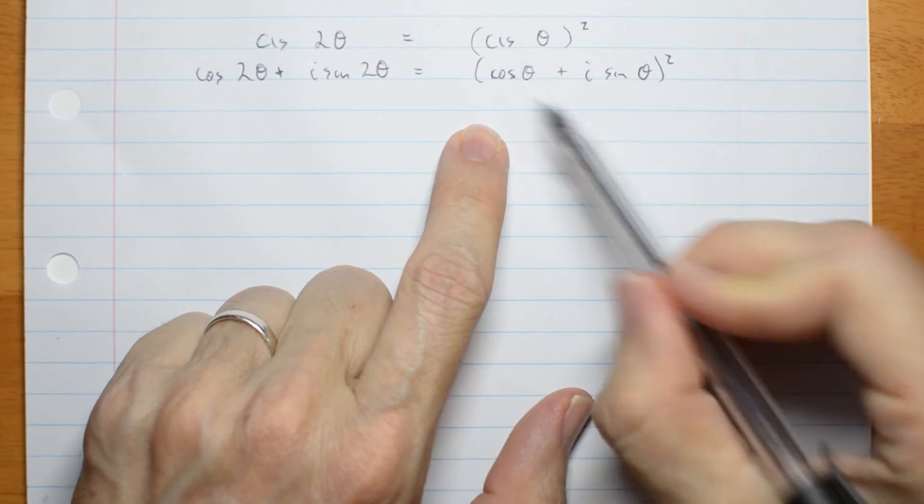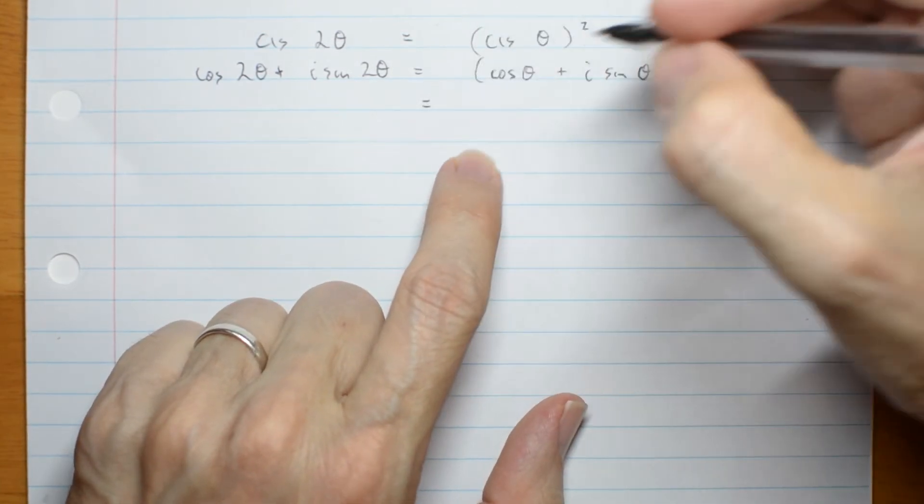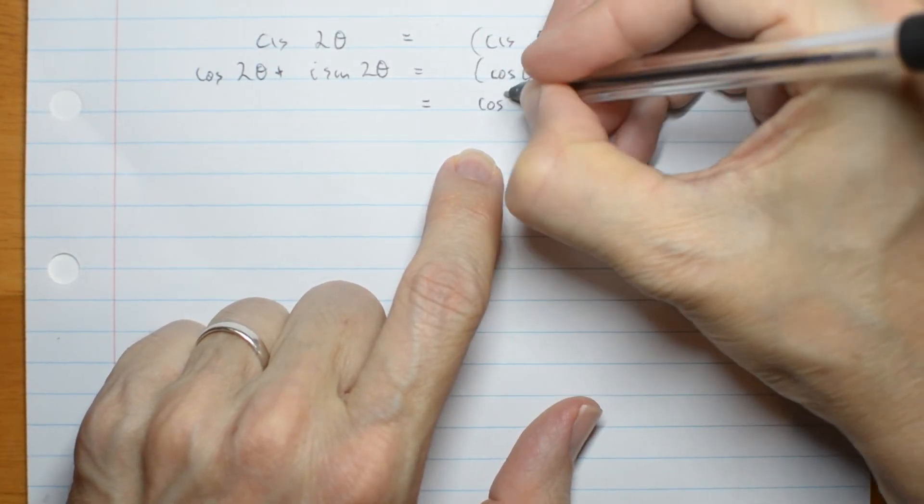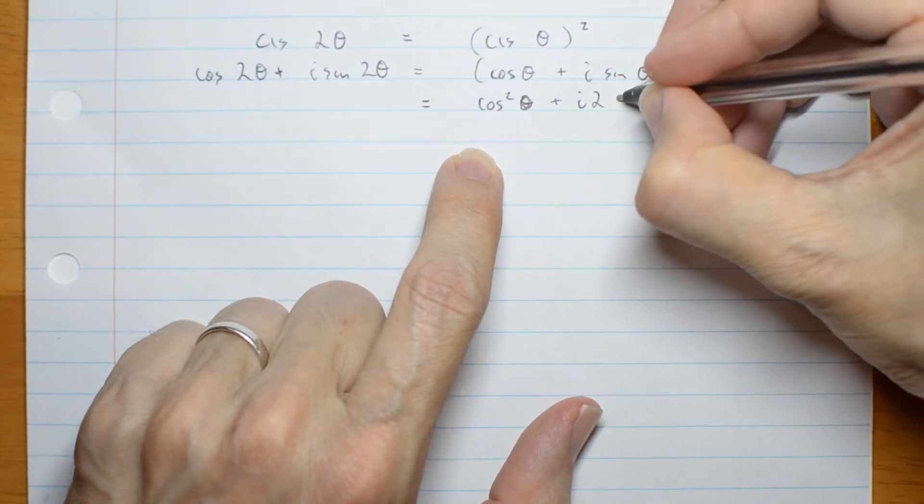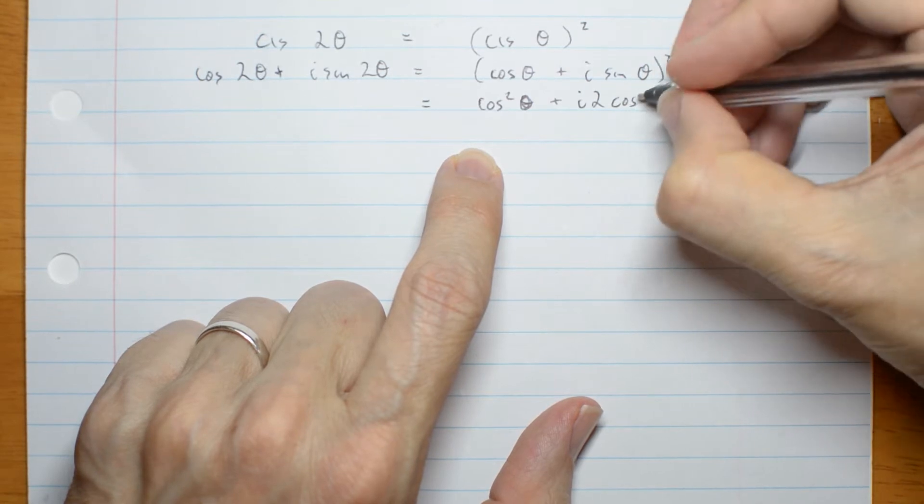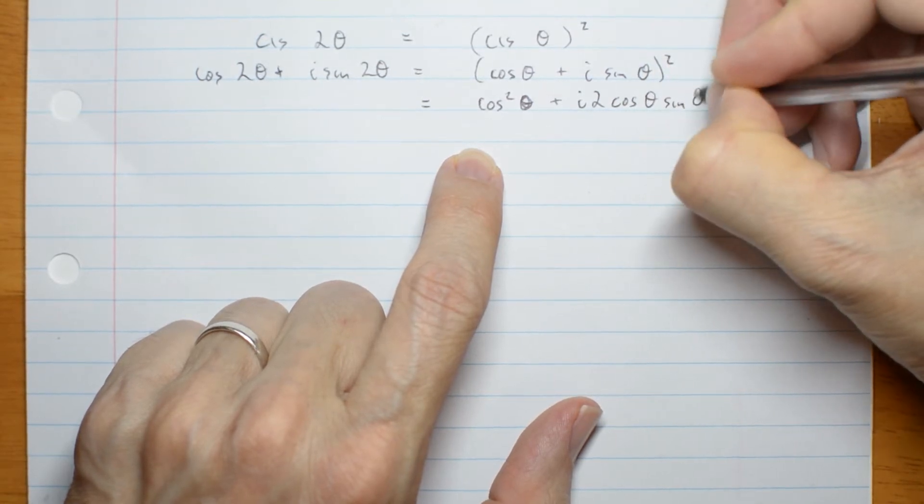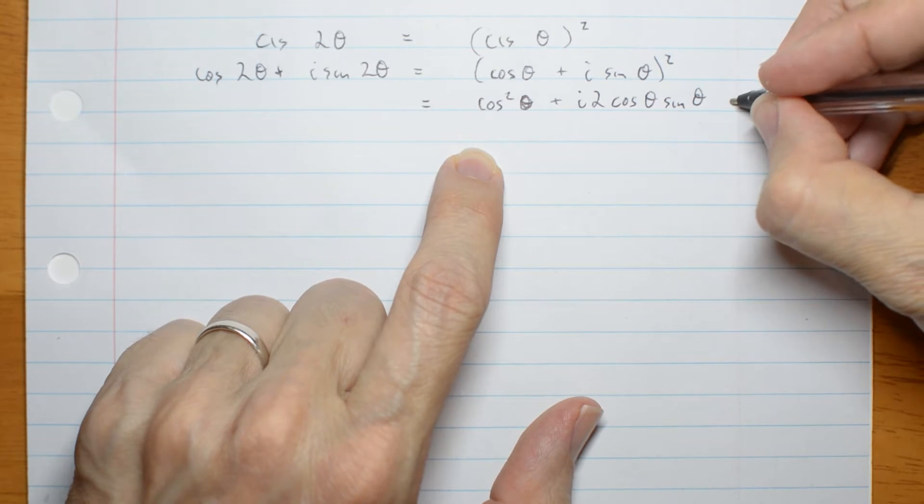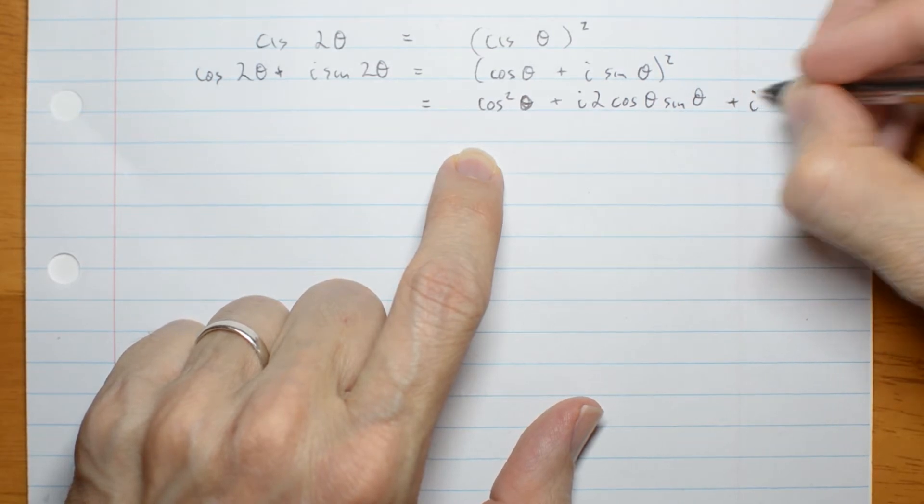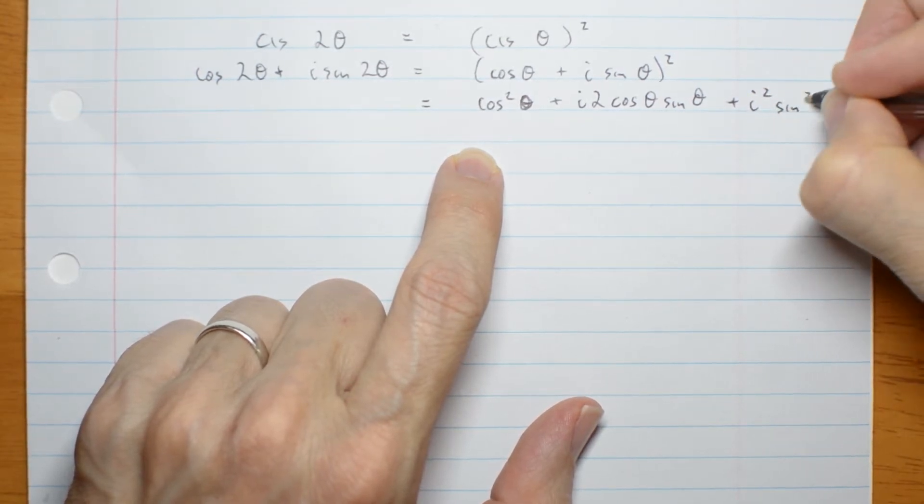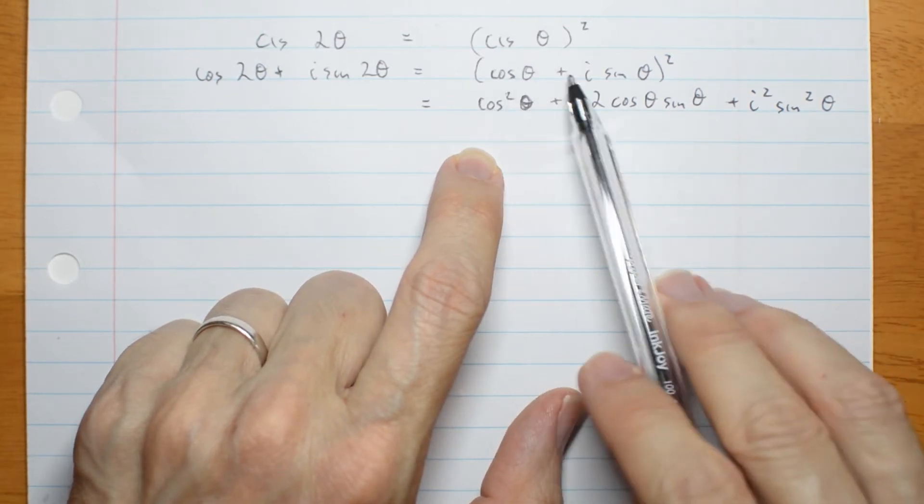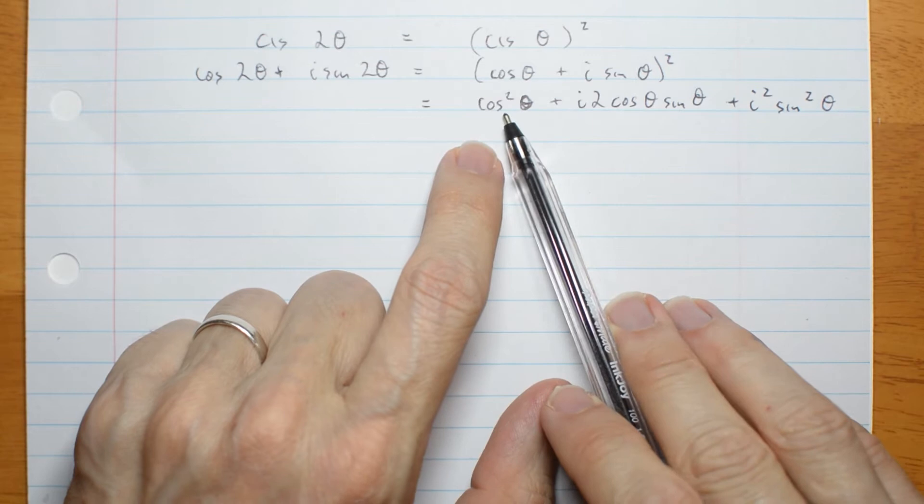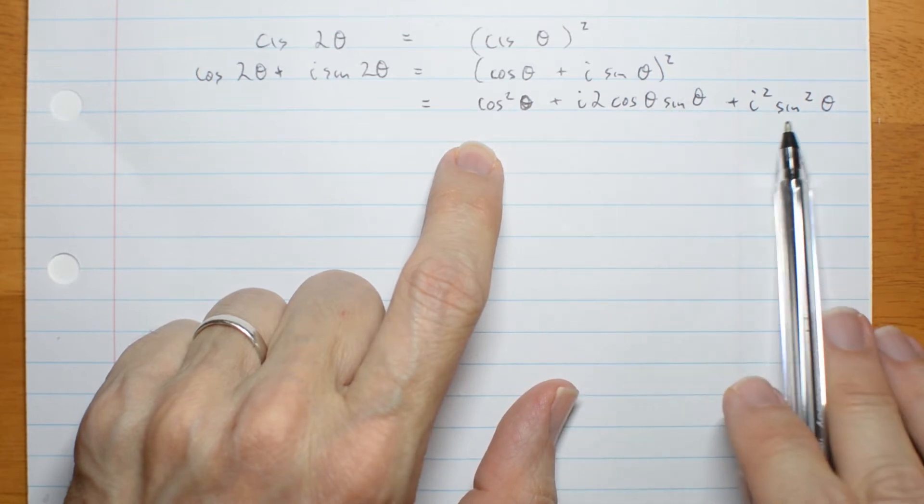Now, this is a squared, so let me expand that again. Cos squared theta plus i 2 cos theta sine theta plus i squared sine squared theta. That's just my expansion of a plus b squared being a squared plus 2ab plus b squared.